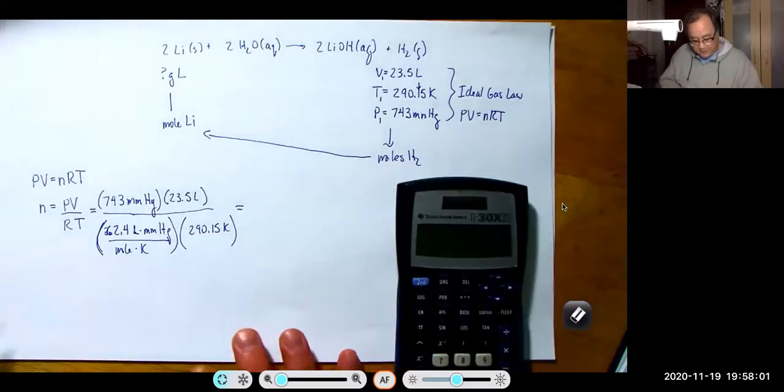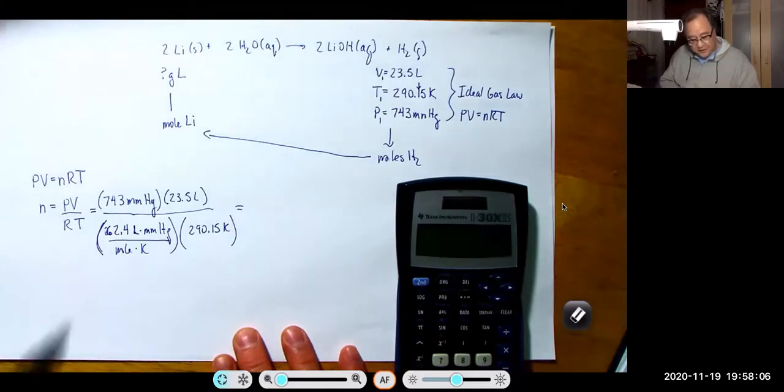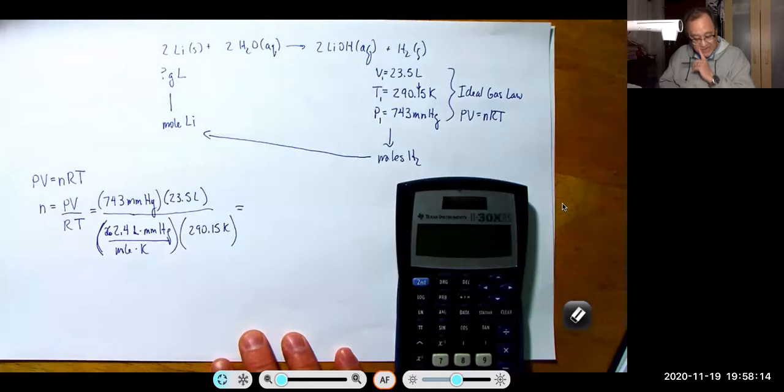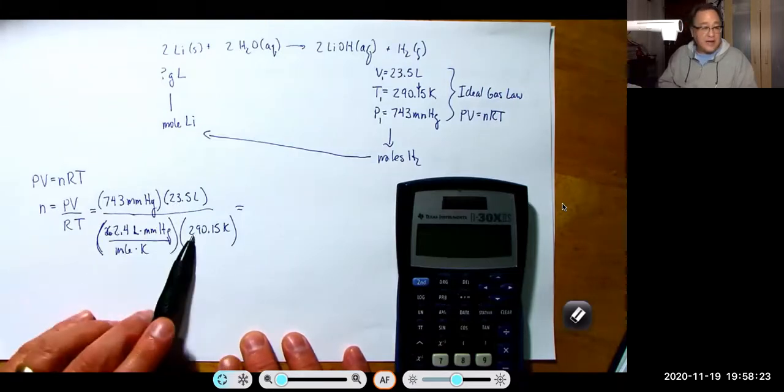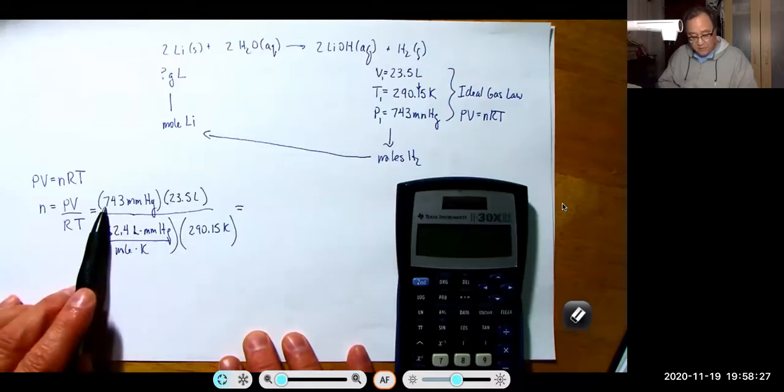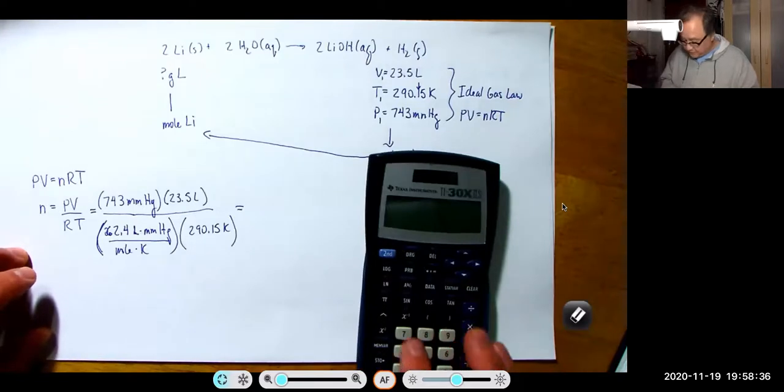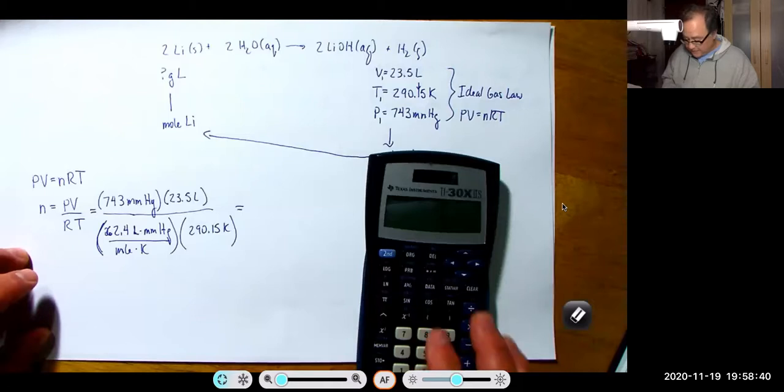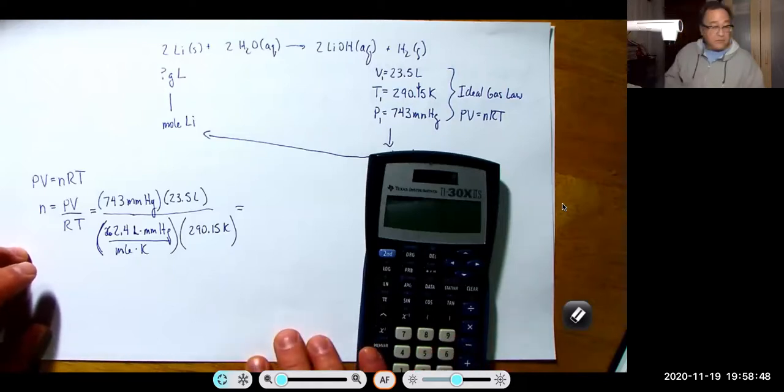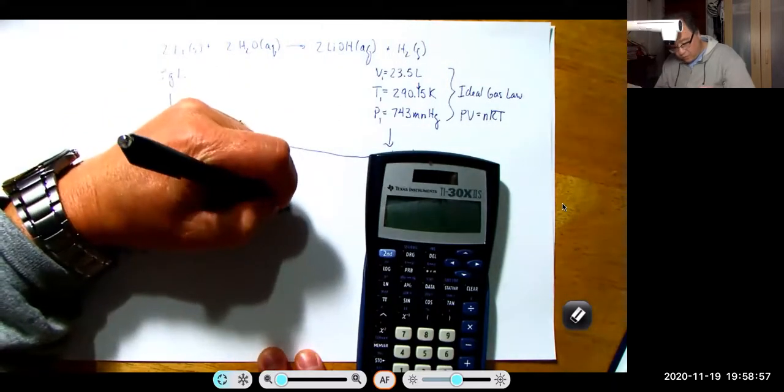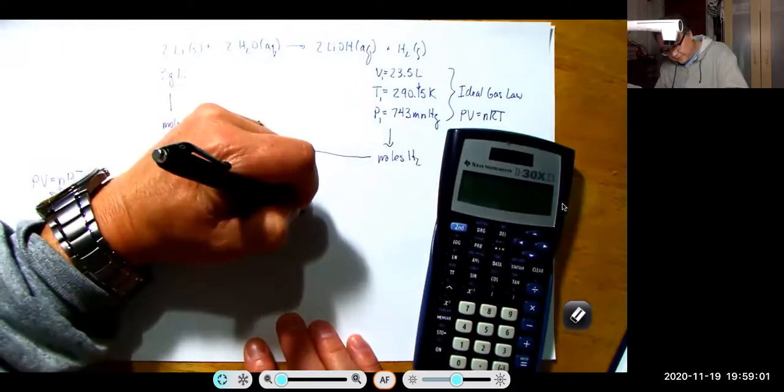So let's see what we get here. I'm going to estimate. 23 will go into that about three times. Three times 290 is around 900. And 743 divided by 900 puts me at around 0.9 or 0.8, something like that. So 743 times 23.5 divided by 62.4 and divided by 290.15 and we get 0.96. Three sig figs, 0.964. And that's going to be moles of H2.